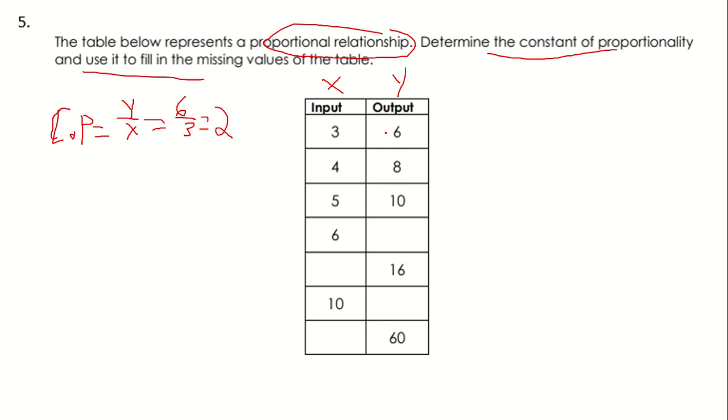So the relation between the input and the output is going to be 2. Input times 2 is going to give us the output. We multiply 3 by 2, we get 6. 4 times 2 is going to be 8. 5 times 2 is going to be 10.